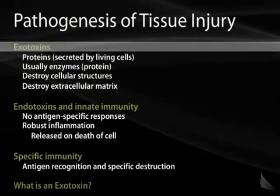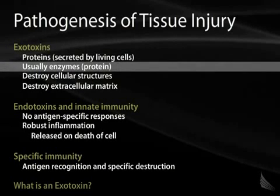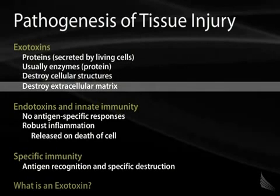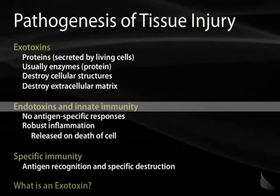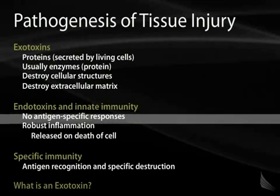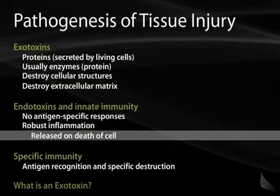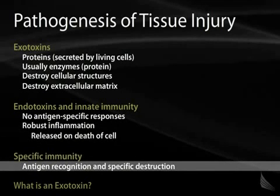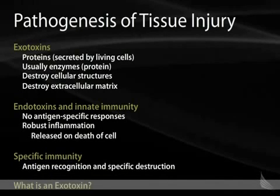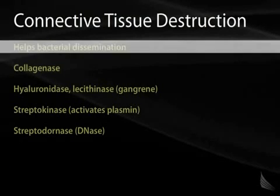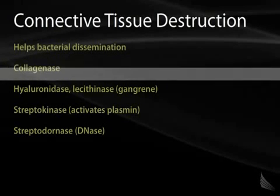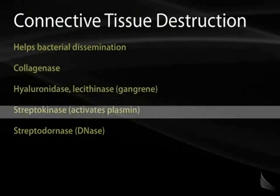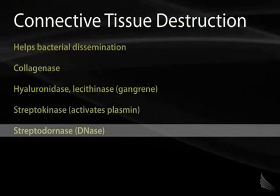Pathogenesis of tissue injury: Exotoxins are usually proteins acting as enzymes that destroy cellular structures and the extracellular matrix. Endotoxins and innate immunity are not antigen-specific — they incite inflammation wherever they can and are usually released on cell death. Specific immunity is antigen recognition-dependent and gives targeted destruction. Connective tissue destruction enzymes — including collagenase, hyaluronidase, lecithinase, streptokinase, and streptodornase — help bacteria move through tissue and establish infection.